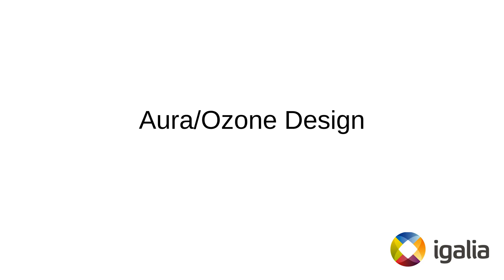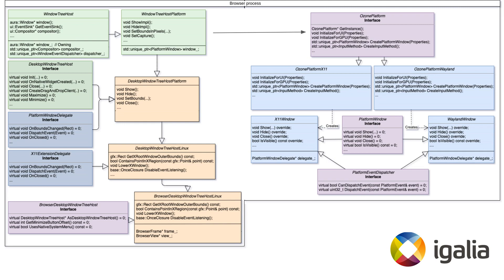Now let's see how Aura and Ozone are connected. Ozone lives both in the browser and in the GPU processes. This diagram represents the UI part of Ozone that lives in the browser process side. From the Aura side, each browser window with tabs, dialogs, and other UI elements is represented by a single instance of the WindowTreeHost. Its name literally means that this thing hosts all those Aura windows that represent the UI elements. The WindowTreeHost is also the point where Aura meets Ozone. Inside, it has a pointer to the PlatformWindow, which is one of the Ozone interfaces. The instance of the PlatformWindow is spawned by the Ozone platform implementation that is currently active. The relation between WindowTreeHost and PlatformWindow is one-to-one, and their lifetime is synchronized. The PlatformWindow is owned by the WindowTreeHost.